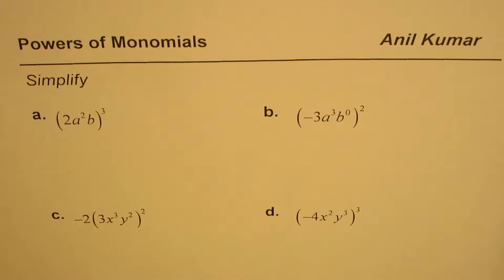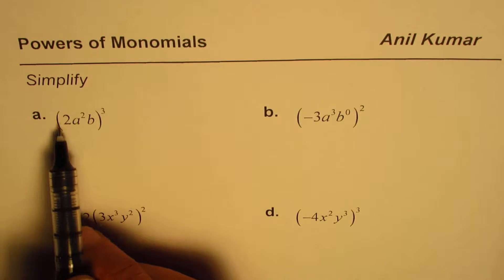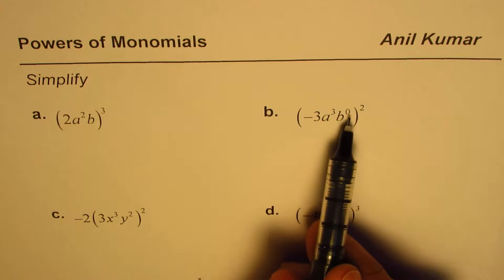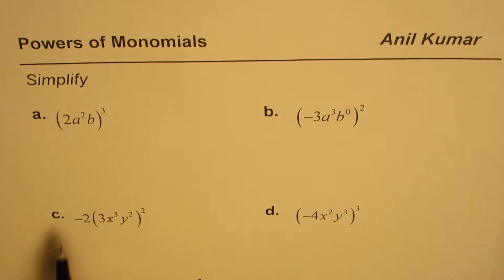You can pause the video, simplify, and then check with my solution. The first one is (2a²b)³. The second one is (-3a³b⁰)². The third is -2(3x³y²)². The fourth is (-4x²y³)³.